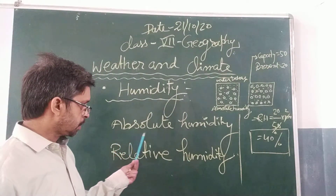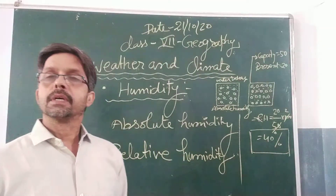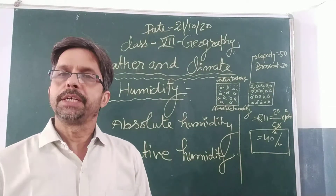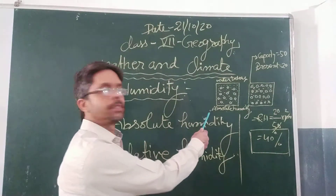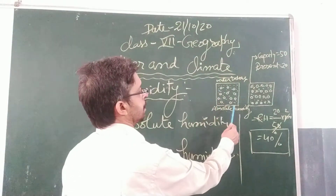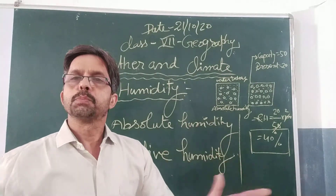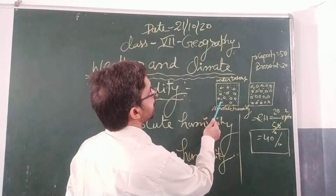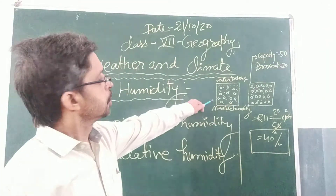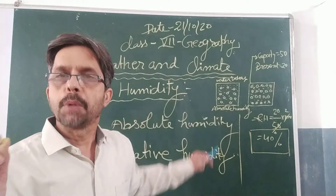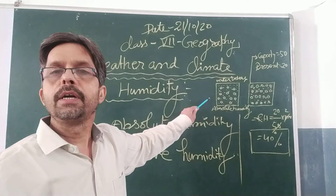The next term is absolute humidity. Absolute humidity means the amount of water vapor which is present in the air at that time. Suppose here one picture is taken — a fixed volume, say one cubic meter — having 10 water vapor. This means the actual amount of water vapor present in the given volume of air is called absolute humidity.